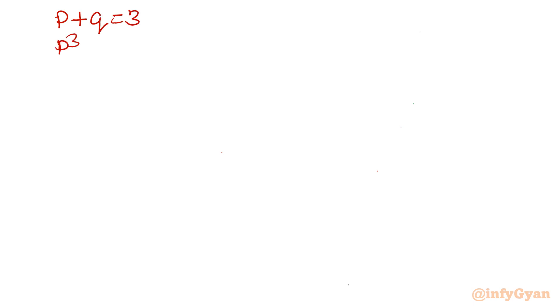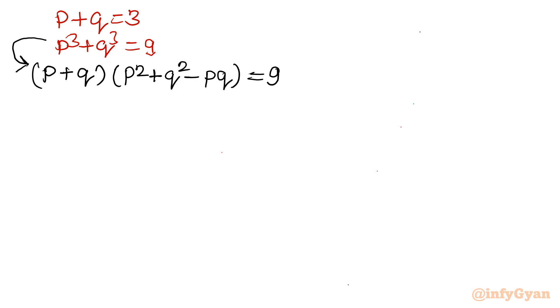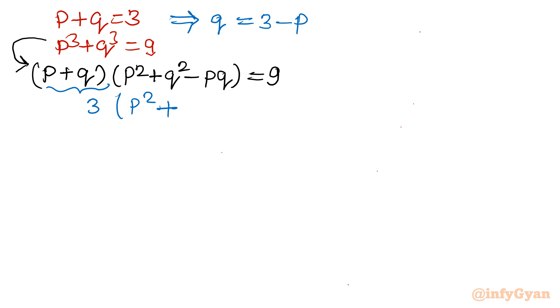Now from equation 2, p cubed plus q cubed equals 9. I will use the algebraic identity: a³ + b³ = (a+b)(a² - ab + b²). From equation 1, q = 3 minus p. Substituting: 3 times (p² + (3-p)² - p(3-p)) equals 9. Expanding: p squared plus 9 plus p squared minus 6p minus 3p plus p squared equals 3.